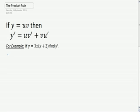So, it goes like this. If y equals uv, where u and v are each one of the parts, then y dash equals uv dash plus vu dash. In other words, the derivative is equal to the first part times the derivative of the second part plus the second part times the derivative of the first part.